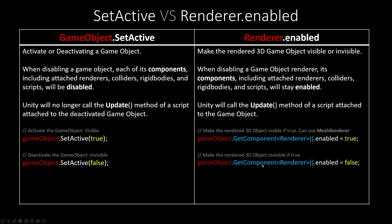We get its component — the renderer. There could be different types of renderer; you could use Renderer or MeshRenderer, etc. Then you set .enabled. If you pass true, the renderer and game object will be visible. If false, it will be invisible.